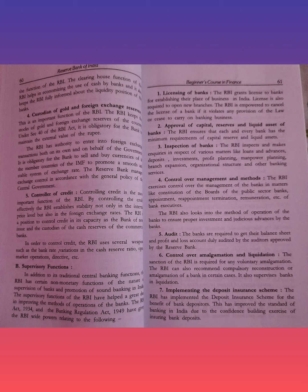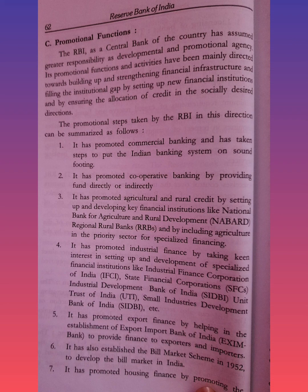Category C is promotional functions. Apart from central banking and supervisory functions, the RBI also performs promotional functions. It has promoted commercial banking and put India's banking system on a sound footing, promoted cooperative banking, agricultural and rural credit banking, and promoted industrial finance through specialized institutions like IFCI, SIDBI, SFCs, NABARD, and regional rural banks. The RBI also established the Bill Market Scheme in 1952 to develop the bill market.